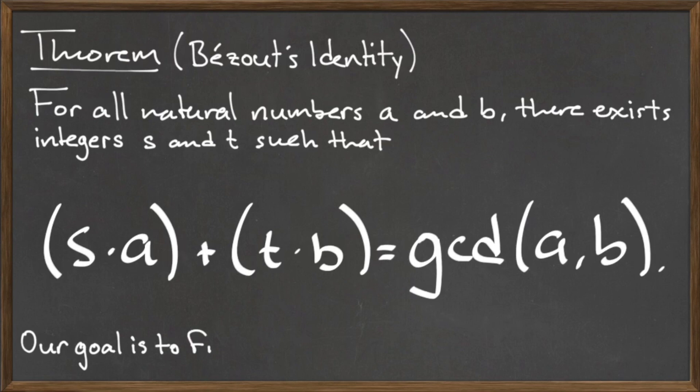These integers s and t are known as the cofactors of a and b. Note that the integers s and t are not unique, which means that there may be more than one pair of values for s and t that satisfy the equation.